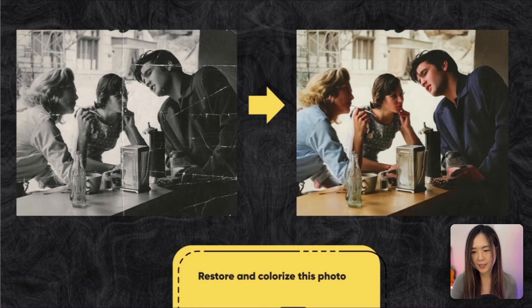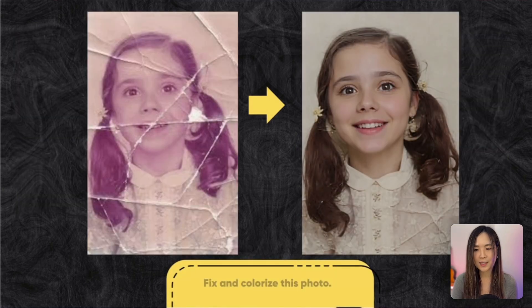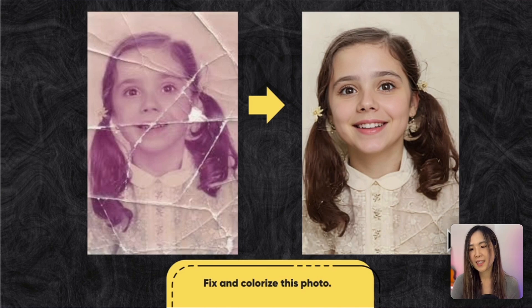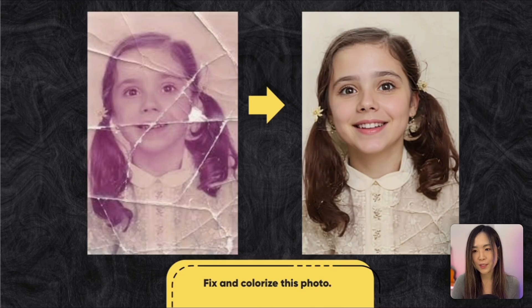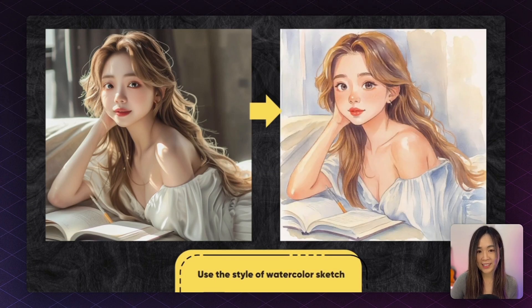Restoring old photos is another useful use case. I tested cracked, folded black-and-white images, and Context fixed and colorized them, matching the color tone to the time period. Another example is impressive, though there are some artifacts where it misidentified a fold in the photo as a pattern on a shirt. Other than that, the image is super impressive — it almost feels like it was taken with an iPhone.